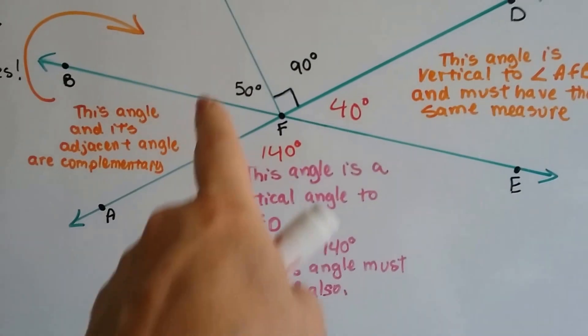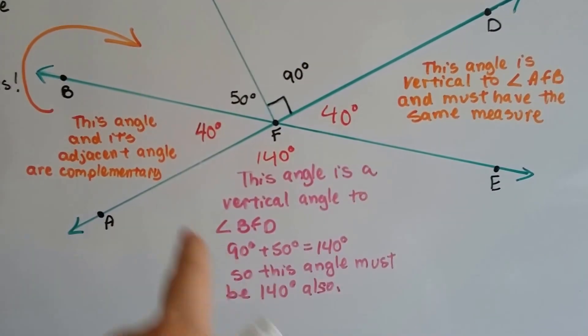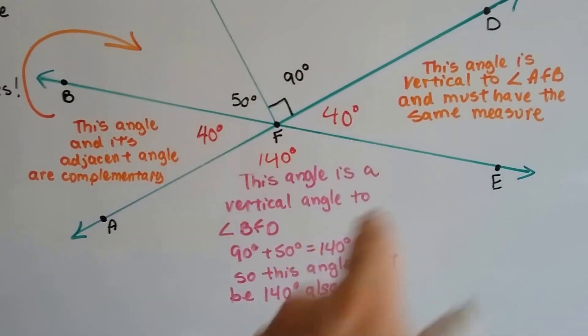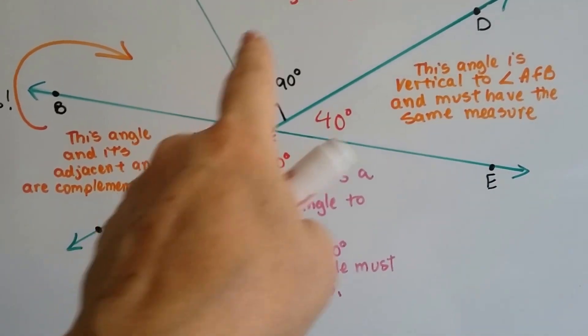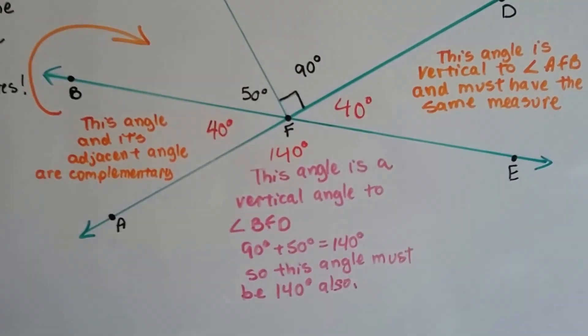If we added all of these up together, it would total 360 degrees like a circle. Because we would be going around in a circle. We'd have 40, 50, 90, 40, 140, and we would have created a 360 degree circle.